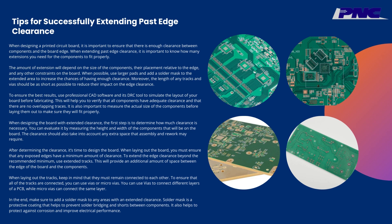When designing a printed circuit board, it is important to ensure that there is enough clearance between components and the board edge. When extending past edge clearance, it is important to know how many extensions you need for the components to fit properly. The amount of extension will depend on the size of the components, their placement relative to the edge, and any other constraints on the board. When possible, use larger pads and add a solder mask to the extended area to increase the chances of having enough clearance. Use professional CAD software and its DRC tool to simulate the layout of your board before fabricating to verify that all components have adequate clearance and that there are no overlapping traces.